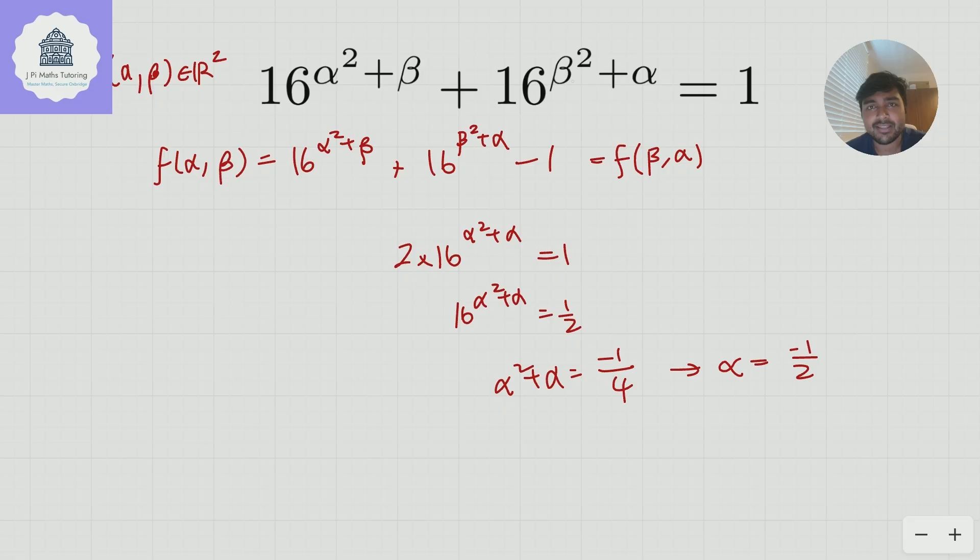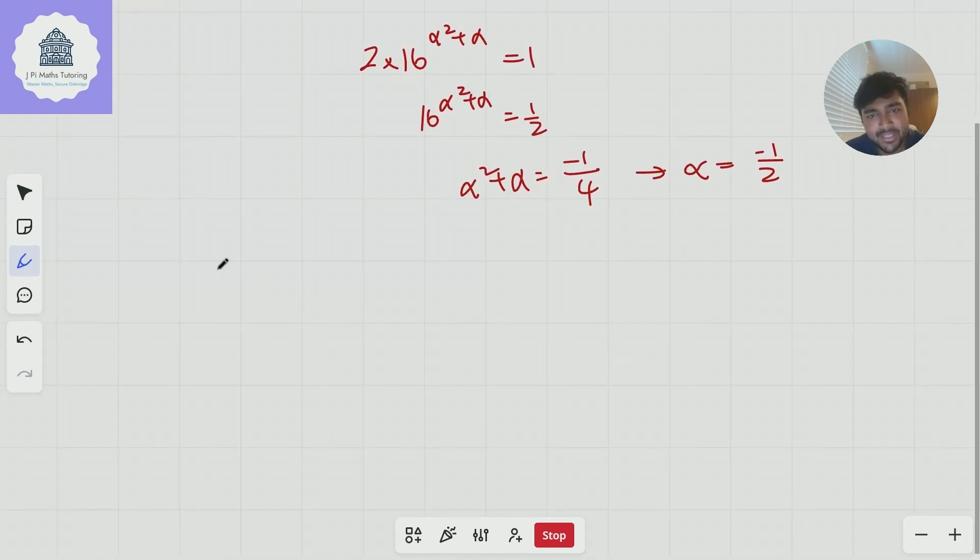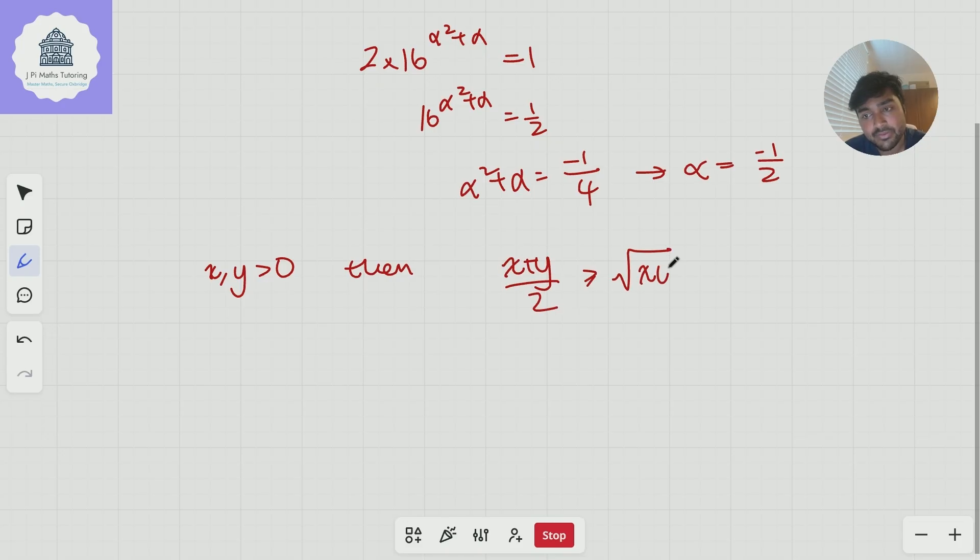Well, I'm going to use something called the arithmetic mean geometric mean inequality. This is something which maybe you haven't learned in school, but I think is such a useful tool for these sorts of questions. What does the AMGM inequality say? Well, it says that if you have x and y positive numbers, then (x+y)/2 is bigger than or equal to the square root of xy.